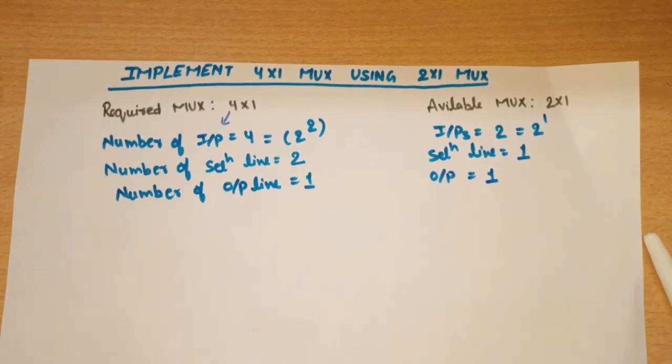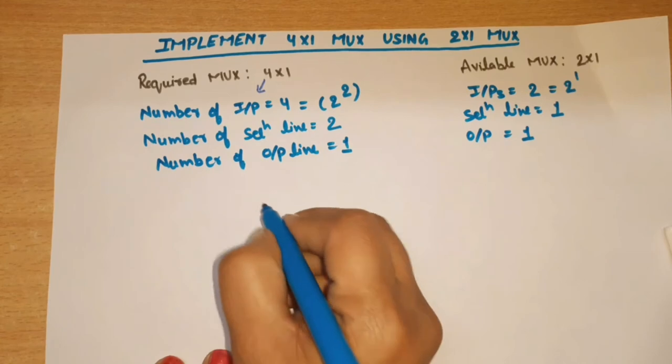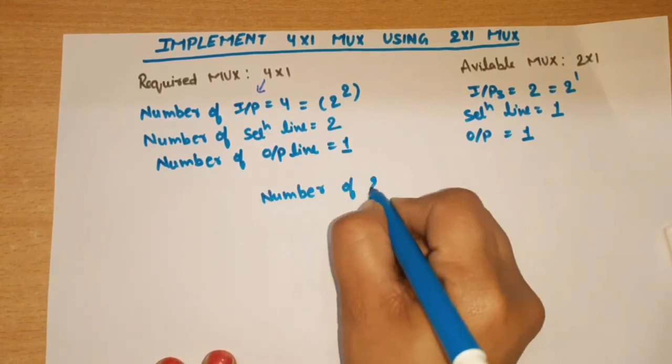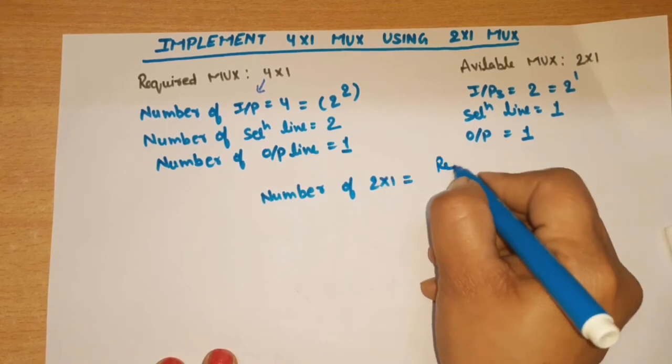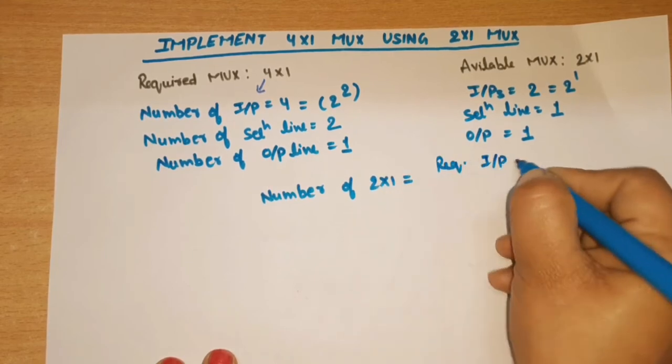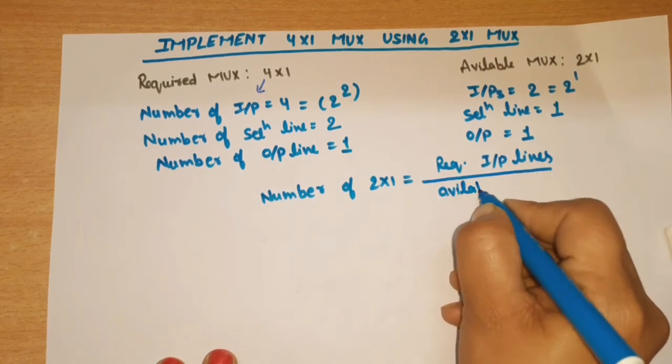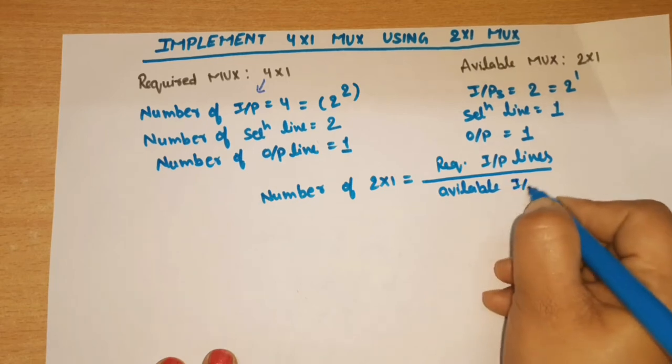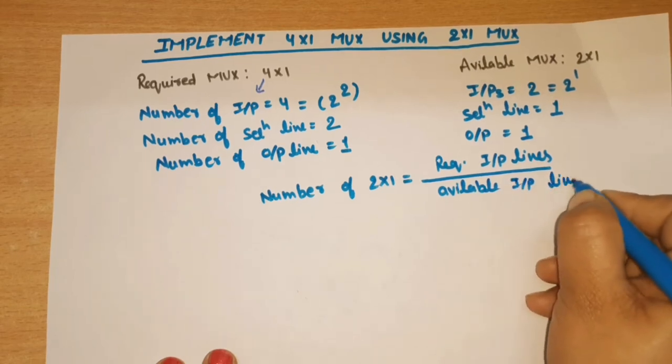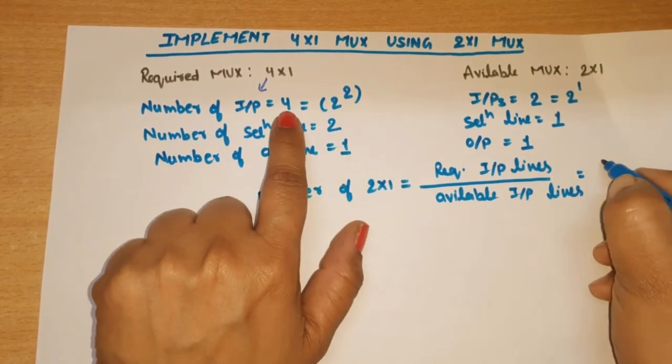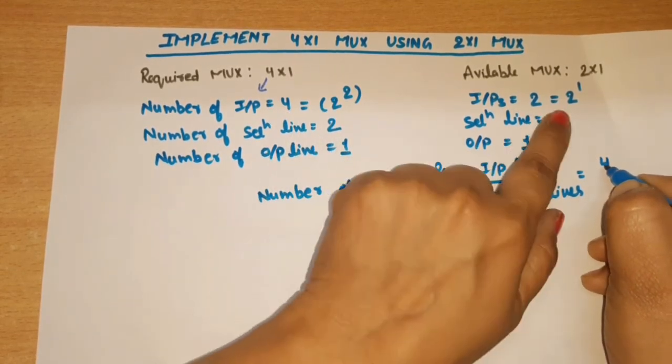Now we know both specifications. To implement 4-to-1 using 2-to-1, how many 2-to-1 MUXes are required? The formula is: required input lines divided by available input lines, which is 4 divided by 2 equals 2.